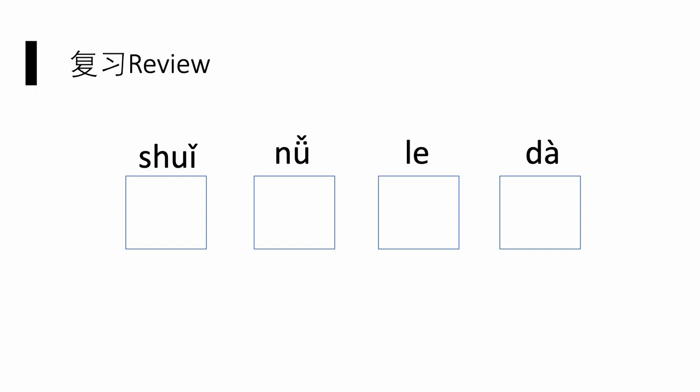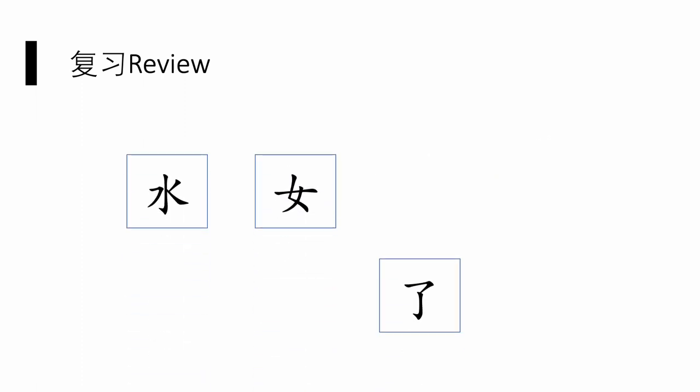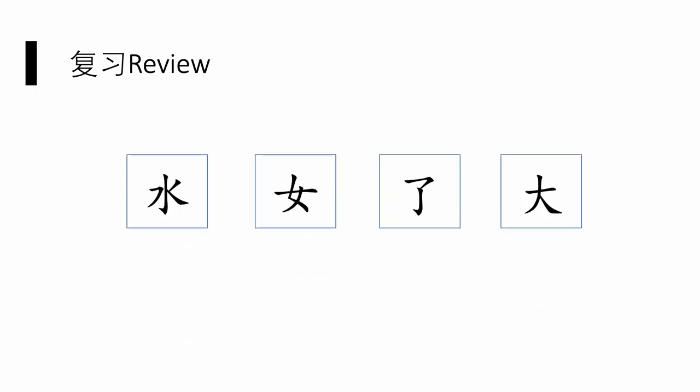喝水的水, water; 女生的女, female, woman; 了, usually a function word; 大小的大, big, huge. Do you still remember how to write them? Let's check the answer together.